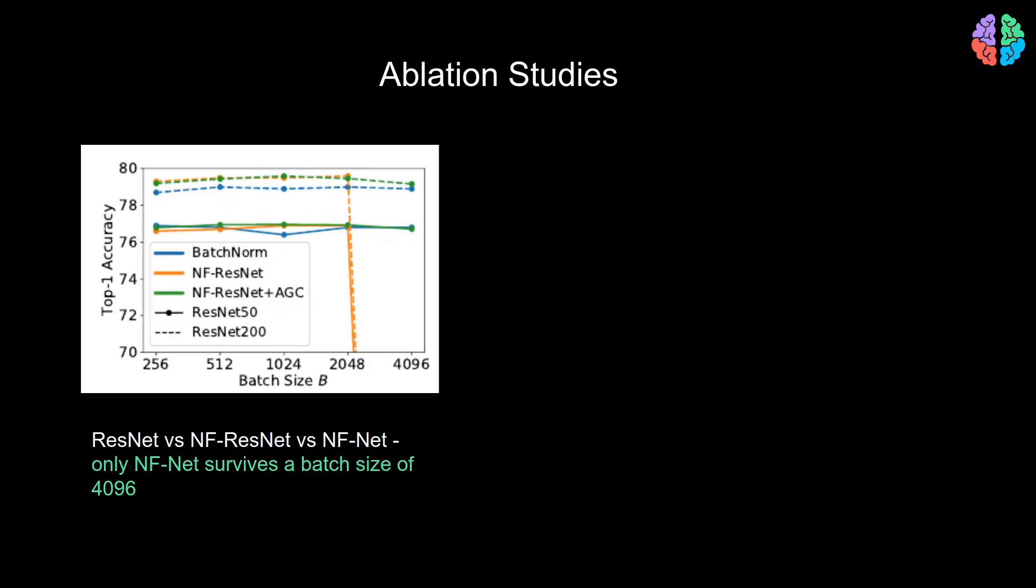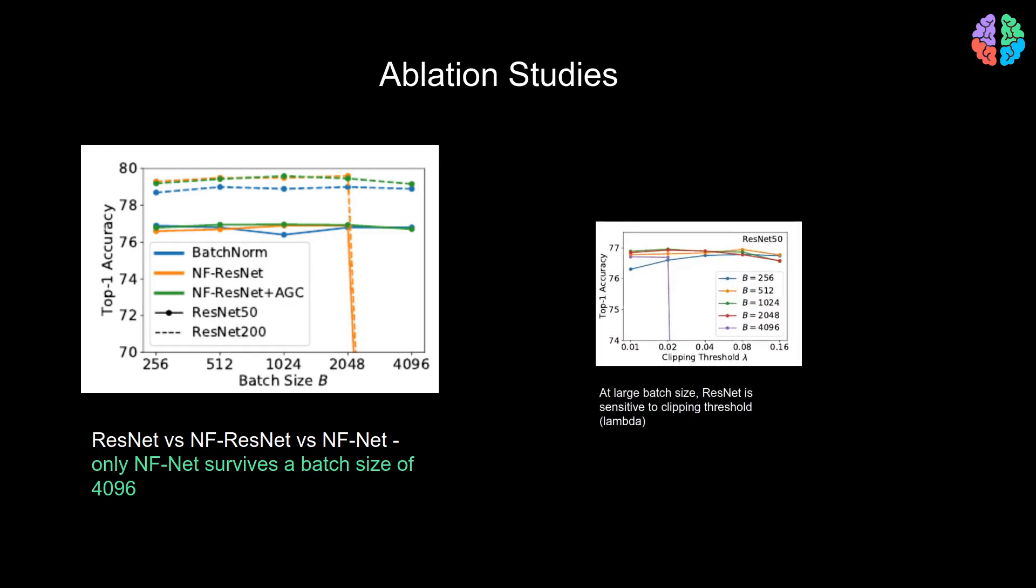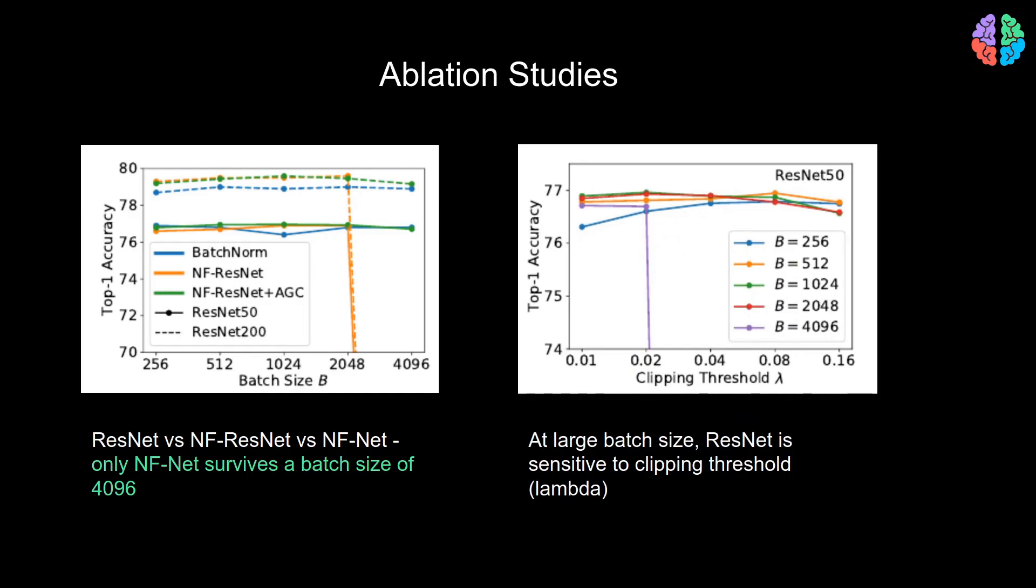The first plot here shows the comparison of our well-known ResNet versus the NF variants, namely NF-ResNet and NF-Net. What we notice is that only NF-Net survives a huge batch size of 4096, while the others collapse without training properly. So we definitely need adaptive gradient clipping when the batch size is really large. The second plot here shows the model behavior with change in clipping threshold lambda. They study the traditional ResNet architecture for different thresholds and show that it collapses when the clipping threshold is increased with a batch size of 4096. This again motivates the need for NF-Nets when the batch size is really large.